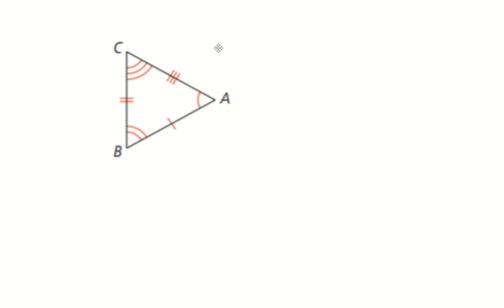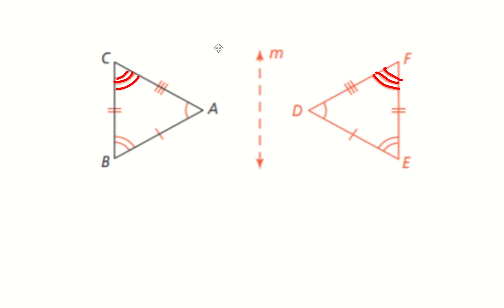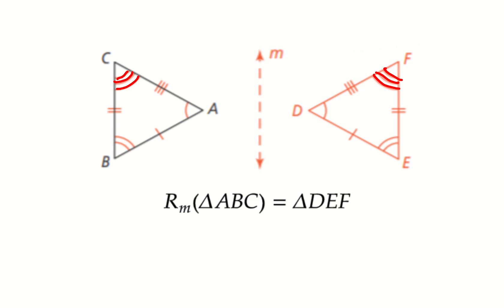Let's look at an example. Say we have triangle ABC and we want to do a reflection about line M, which is a vertical line. If we reflect this figure, we're essentially flipping the triangle over across line M and we get triangle DEF. Notice that the sides are preserved — side AC is congruent to side DF, and angle C is congruent to angle F. All side lengths and angles are preserved, and therefore this is a congruence transformation. Reflecting triangle ABC about line M produces triangle DEF, which is congruent to the original pre-image.